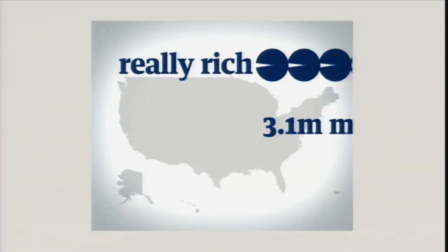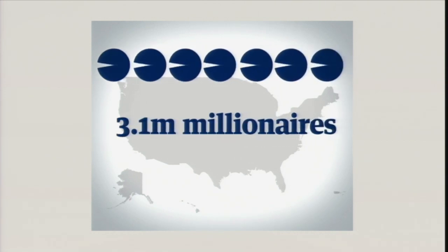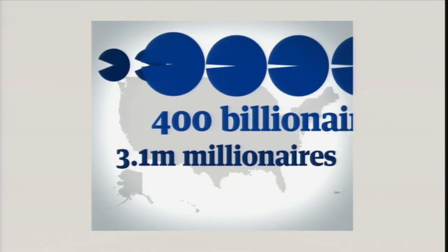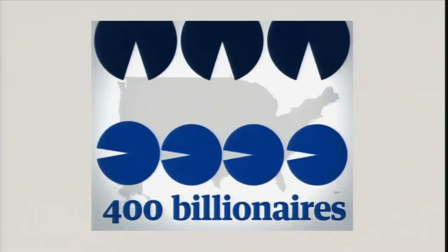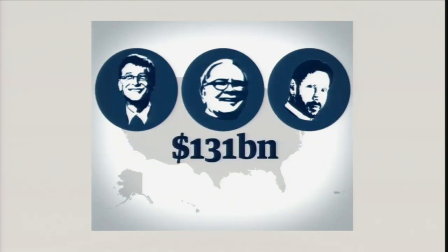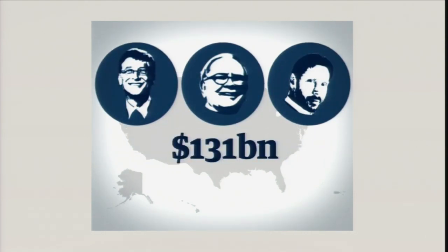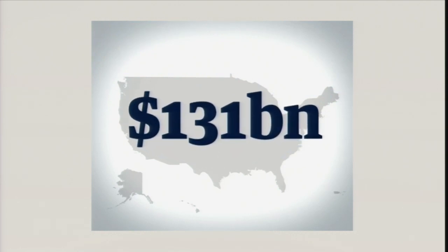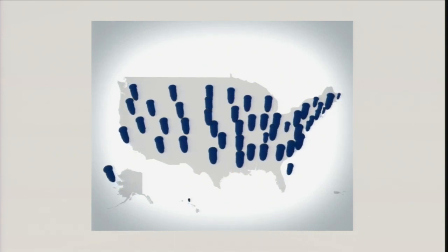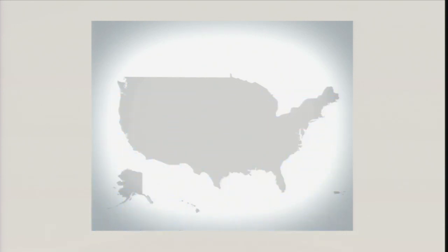There are some really rich people in the US today. There are now over 3.1 million millionaires. But these are not the richest of all — the US has over 400 billionaires, more than any other country in the world. These three have a combined net worth of 131 billion dollars — just over the combined budget shortfall of every state in the US for 2011, and more than the cost of the global war on terror in 2010. What we were doing with that video was telling a story.